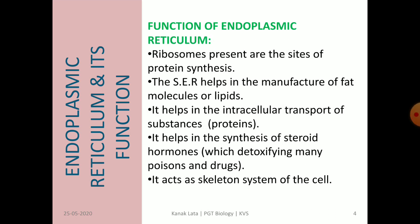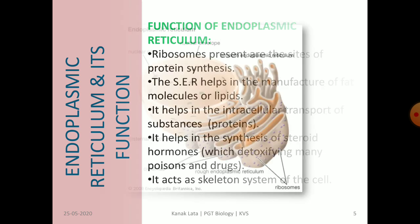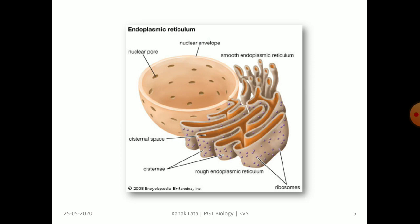Ribosomes present on the surface of endoplasmic reticulum are the site for protein synthesis. The smooth endoplasmic reticulum helps in the manufacture of fat molecules or lipids. It also helps in intracellular transport of proteins and in synthesis of steroid hormones, which is responsible for detoxifying poisons or drugs. It also acts as a skeletal system of the cell. In the given figure you may observe the structure of both smooth and rough endoplasmic reticulum.